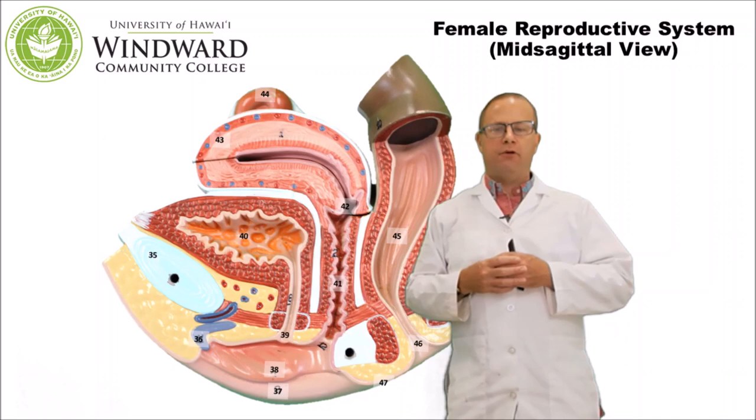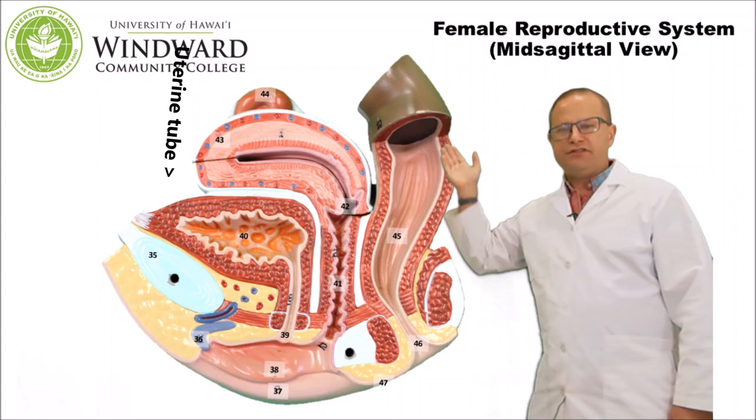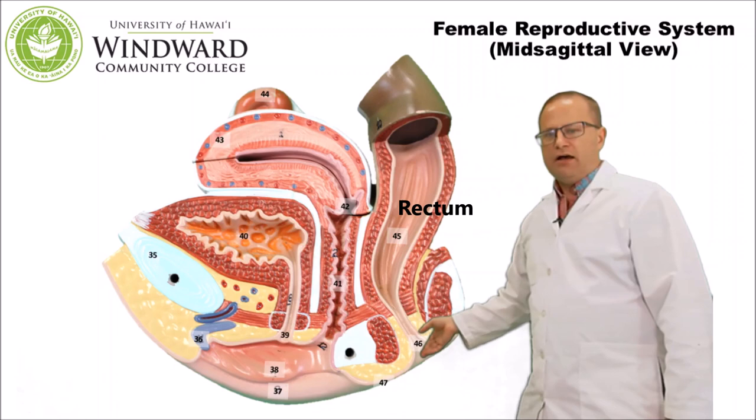Other structures to point out: up top you can see just a bit of the fallopian tube, to be shown on another model shortly. Also for orientation, we have the rectum, the anus, and the perineum — the area between the anus and the genitalia — which also has lots of nerve endings.